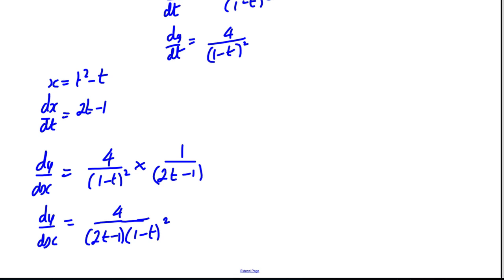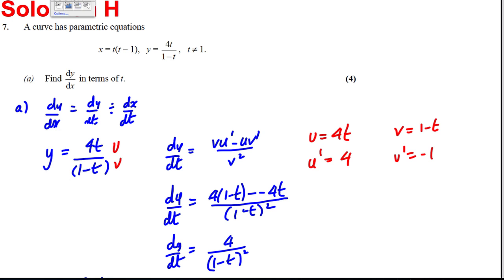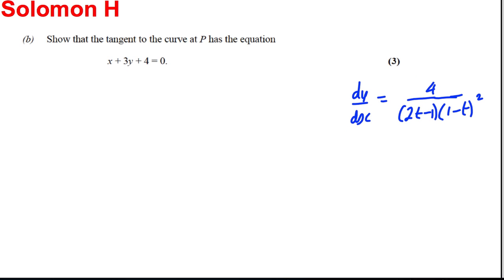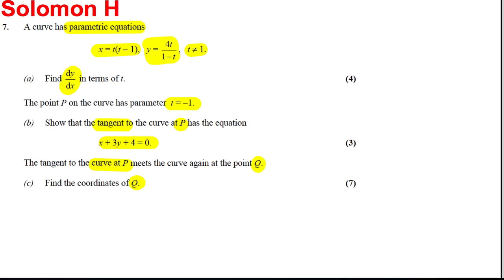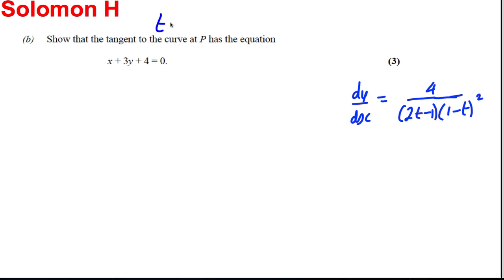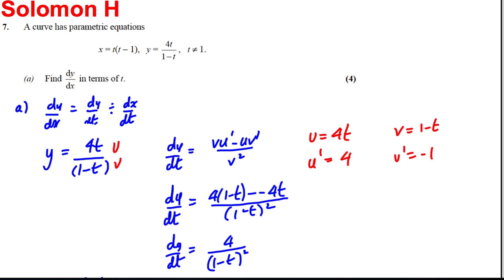Let's keep this dy by dx — it's going to be important in the later parts. Moving on to part b: it says show that the tangent to the curve at p has the given equation. t is equal to negative 1 at p. To find the equation of a tangent we need the gradient and a point, so let's work out x and y when t equals negative 1.